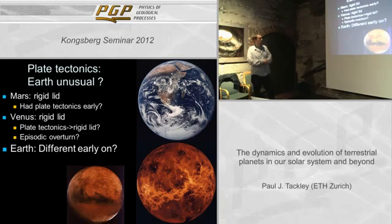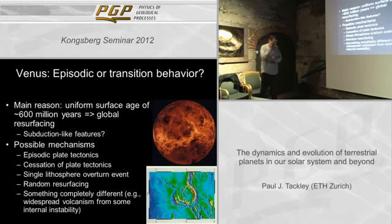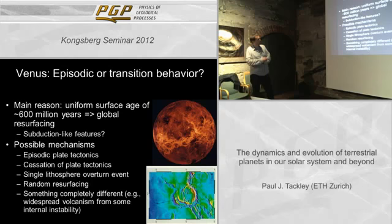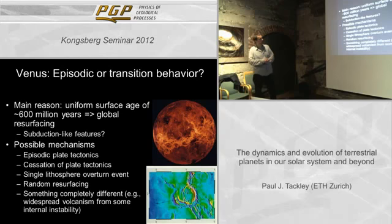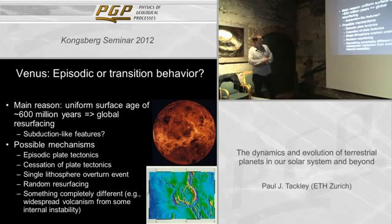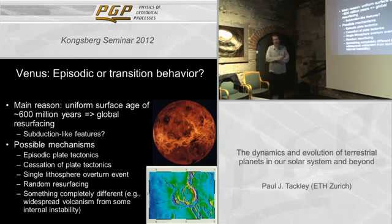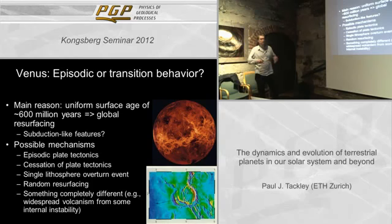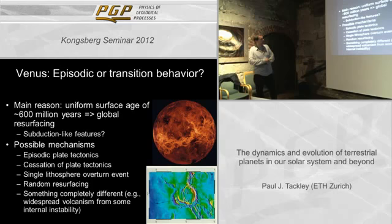People also think that Earth may have been different early on — there are various arguments why present-day subduction would not work if the Earth is a lot hotter and the oceanic crust is therefore thicker. So it's possible that there are different tectonic regimes. One of the curious things about Venus is that the surface is thought to have a relatively uniform age of about 600 million years, and one hypothesis to explain this is a sort of global resurfacing event.